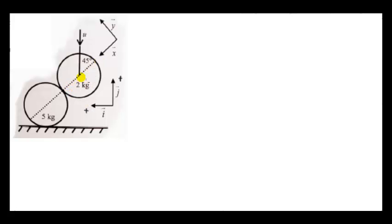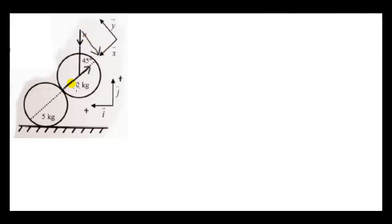When two spheres collide, the force on each sphere is entirely along the line joining the centers of the spheres. Since the force on the two kilogram sphere is in this direction — the force due to the five kilogram sphere — the y component of the initial velocity does not change, because this force has no component in the y direction, which is perpendicular to the line of impact.